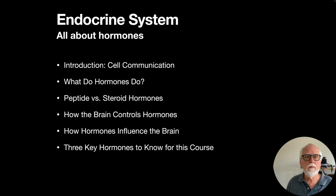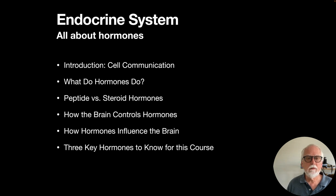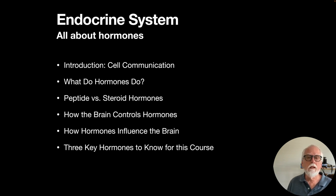Let's review what I've covered in this lecture: how cells communicate with each other; what hormones do; peptide versus steroid hormones; how the brain controls hormones; how hormones influence the brain through three mechanisms; and three key hormones to know for this course — cortisol, oxytocin, and testosterone. Of course, there are many other hormones we'll pay attention to throughout the course. Thank you very much for listening and watching this lecture, and I'll see you next time.